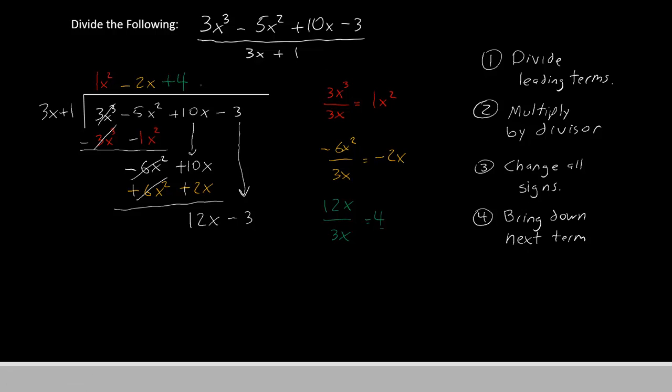Second step, multiply the 4 times the divisor. 4 times 3x is 12x, 4 times 1 is 4. On to the third step, we change all of the signs.